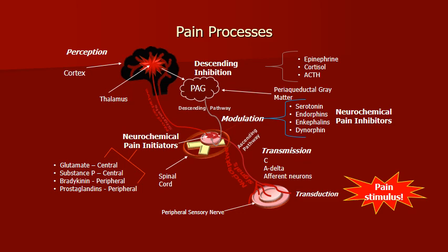Nociception involves four processes: transduction, transmission, modulation, and perception. Transduction is the process by which a stimulus like an injury activates nerve endings. Mechanical, heat, or chemical stimuli can activate pain receptors in peripheral tissues, and these pain stimuli are converted into electrical energy — known as transduction. Transmission occurs next: the nociceptive message is transmitted to the central nervous system via A-delta fibers and C fibers. A-delta fibers send sharp, localized, and distinct sensations, while C fibers relay impulses that are poorly localized, burning, and persistent. This is the process by which the CNS is informed of impending or actual tissue damage.